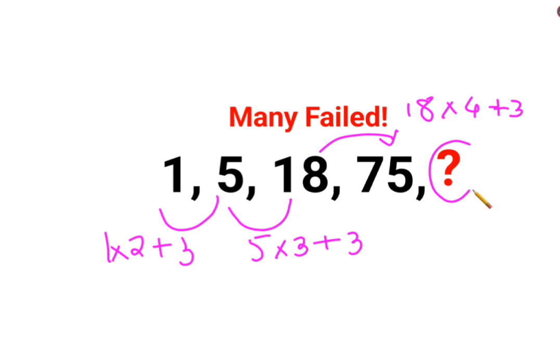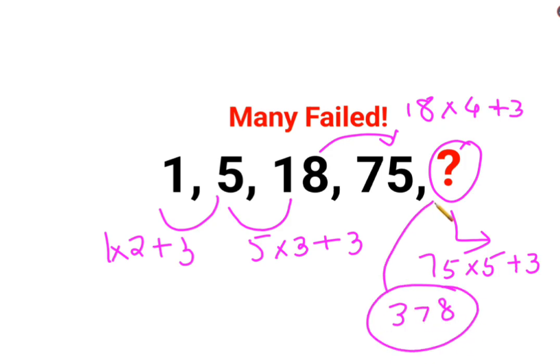3 gets you 75. So this question is supposed to be 75 multiplied by 5 plus 3, so the answer comes out to be 378. The answer for this question mark is supposed to be 378. See, whenever you have something